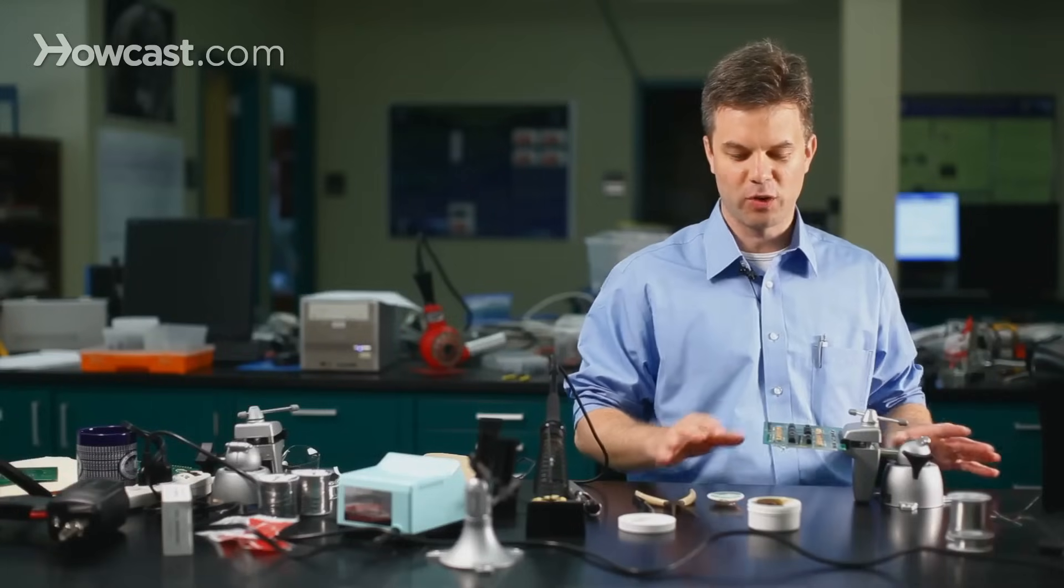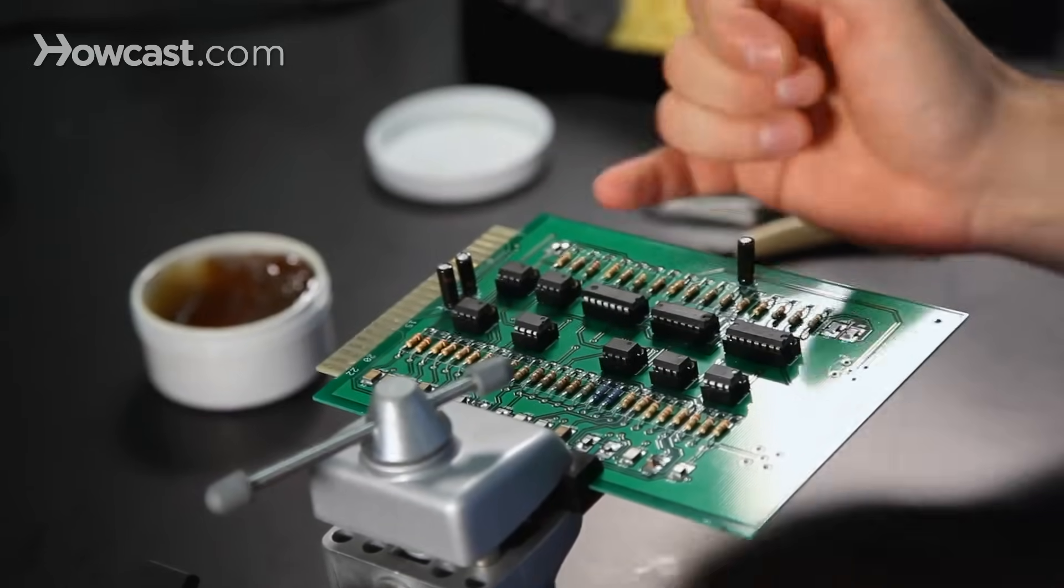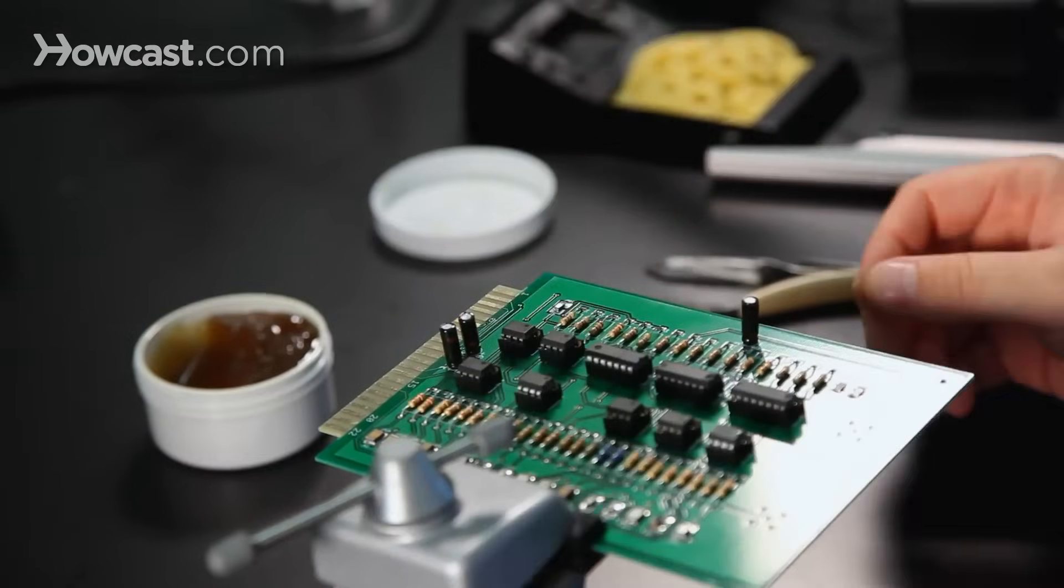First, we need to decide what kind of component we have to work with. We have surface mount components, such as this capacitor, and surface mount components have no hole that passes through the board.